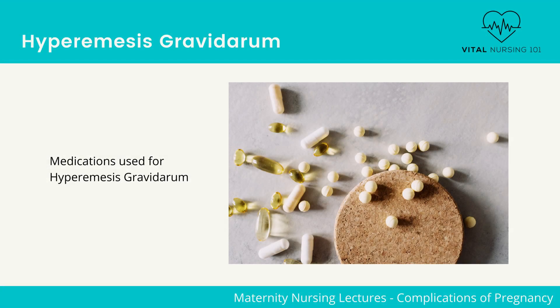Medications used for hyperemesis gravidarum include antiemetics such as ondansetron and vitamin B6. Note that no more than 100 mg daily of vitamin B6 should be used, either solo or in combination with doxylamine. Other therapeutic measures include acupressure and relaxation techniques.